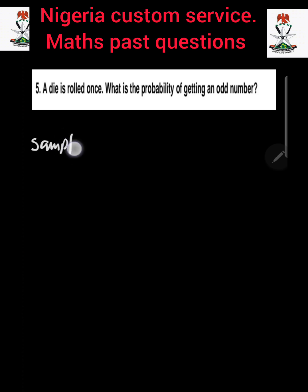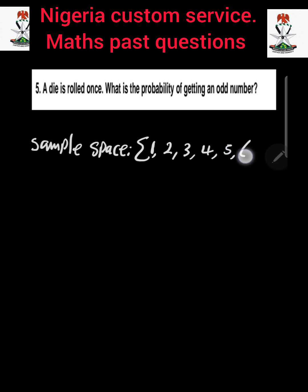Question number 5: A die is rolled once. What is the probability of getting an odd number? This is a probability question. Note that a fair die has six faces, so we are going to have six outcomes. The first thing we need to do is to draw our sample space. The six faces give us outcomes: 1, 2, 3, 4, 5, and 6.